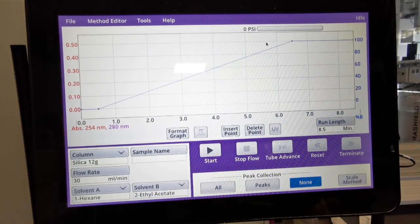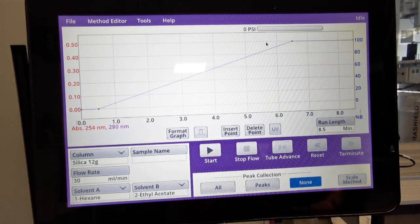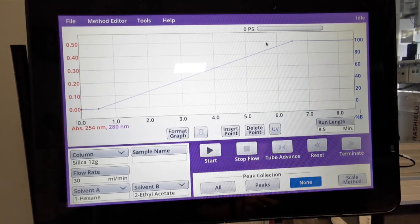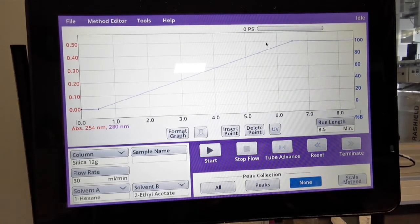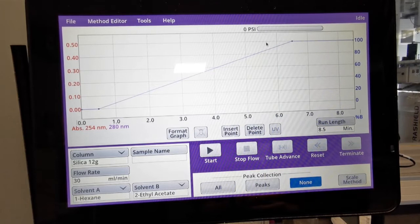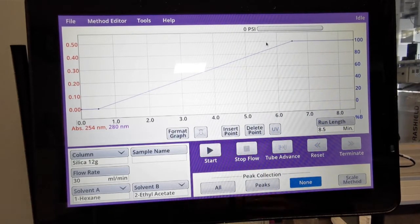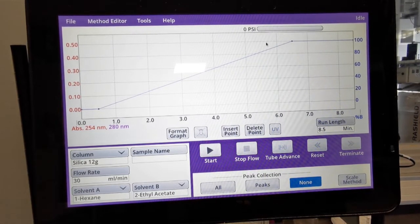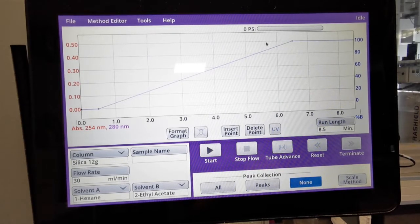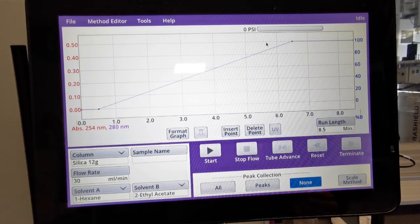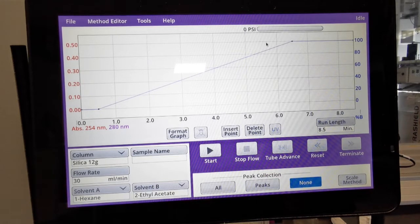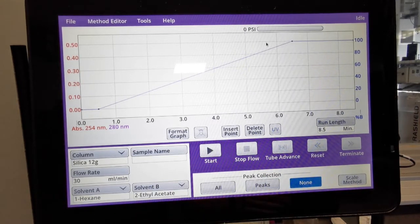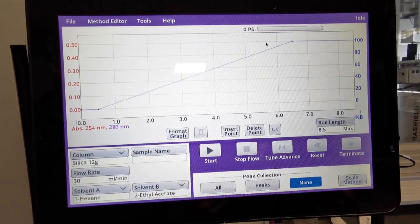You may be in a situation where from TLC you've seen that your compound will elute in DCM methanol but has some very closely running impurities. You also know from TLC that a hexane ethyl acetate gradient will remove those impurities, so you may want to run a hexane ethyl acetate gradient first and then your DCM methanol gradient to elute your compound. So how do we do that?